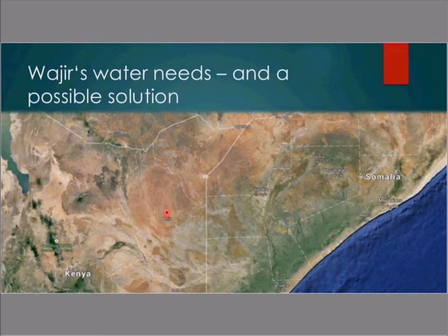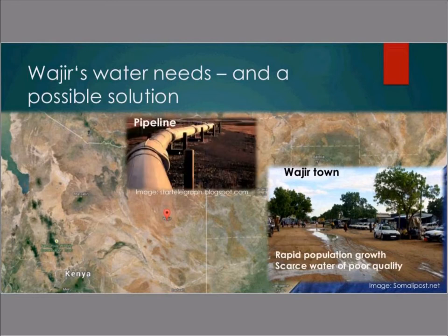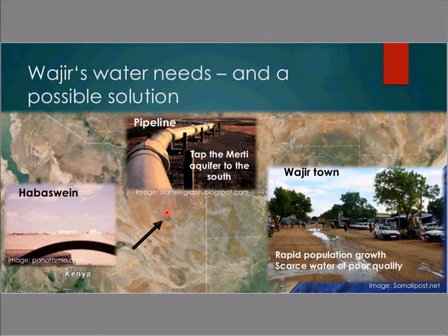Our project looked into the risk of developing groundwater resources to supply the city of Wajir in northern Kenya with clean water. Wajir is on top of a very shallow groundwater body which is highly contaminated because of livestock and human excrements. The city is rapidly growing, currently having 300,000 people and is expected to grow to a million in the next 10 years. The plan is to look into getting a pipeline to bring water from the Merti aquifer, which is 100 kilometers to the south, to supply the city of Wajir.